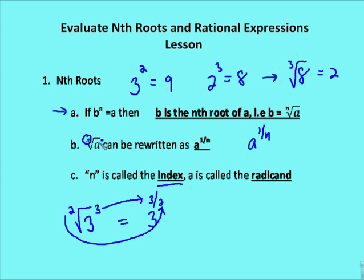The value a underneath the radical is called the radicand. So we have the index, the radicand, and the power — the entire expression is called the radical. The power is in the upper right-hand corner, and if not stated, it equals 1.